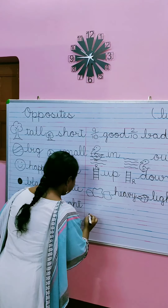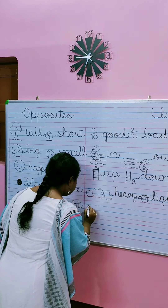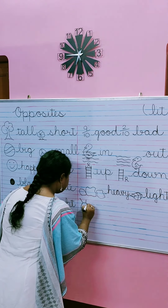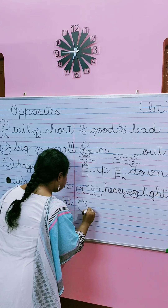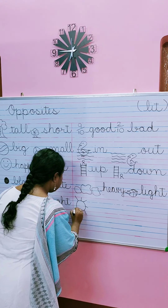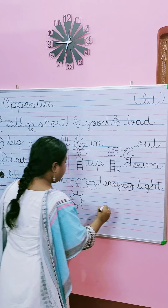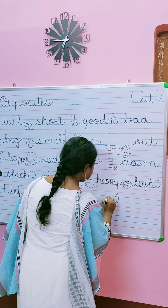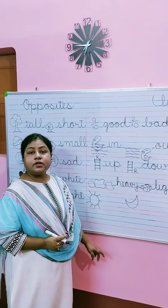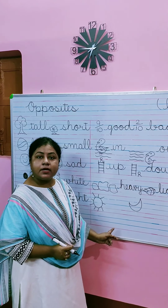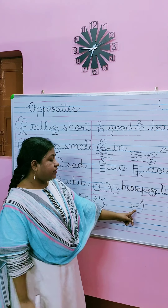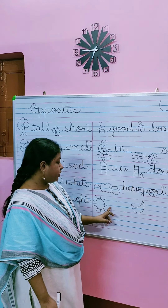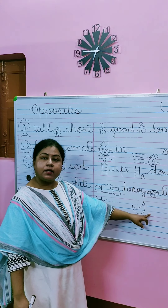Now I'll draw the sun and moon. So children, when we see the sun it is daytime, and when we see the moon it is night. So we'll write here day and night.